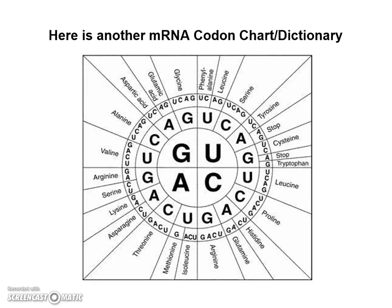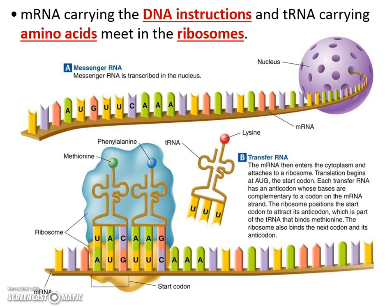Here's another version of that same mRNA codon chart. Instead of dragging and dropping like a multiplication table, you start in the middle like a bullseye and pick your first base. If the codon says AAA, start with the first A, work your way over, and the third A gives you lysine. So to sum that up: mRNA carries the instructions, tRNA carries the amino acid, and the ribosome assembles the protein. Those are the three different functions of RNA.